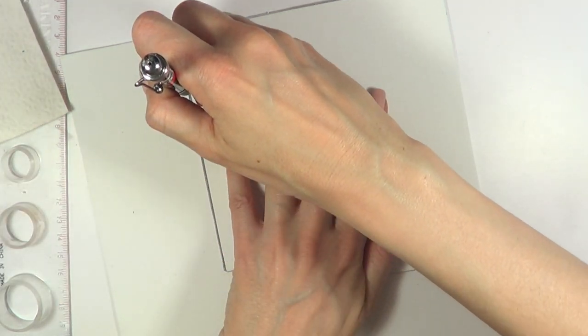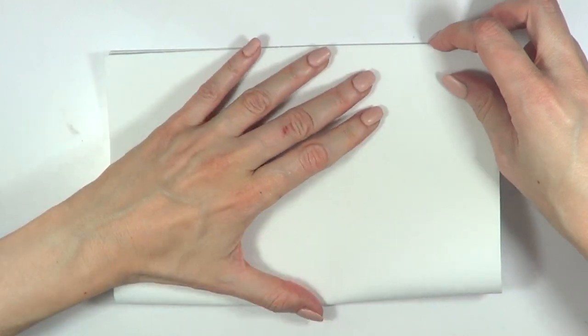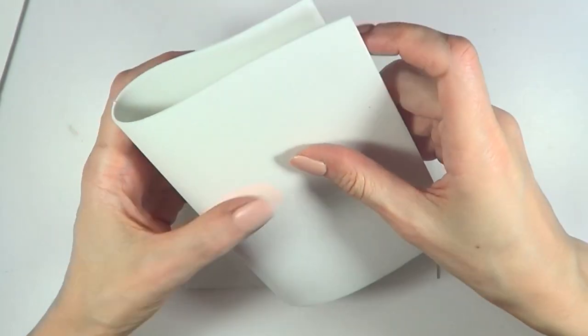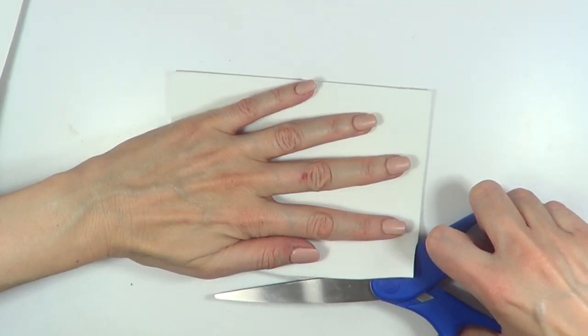Then I'm taking another sheet, folding it in half and cutting that. Those I'm folding in half as well and cutting them too, so now I have like five pieces.